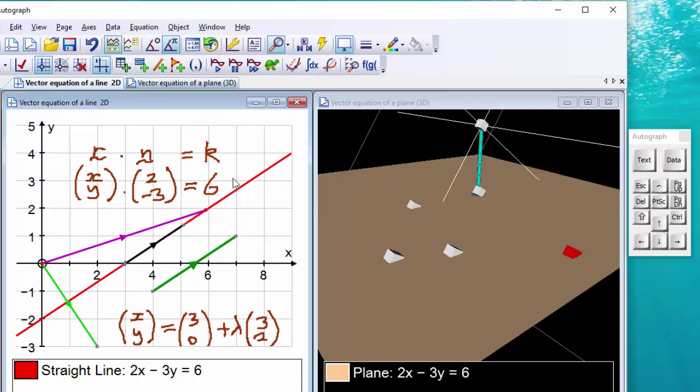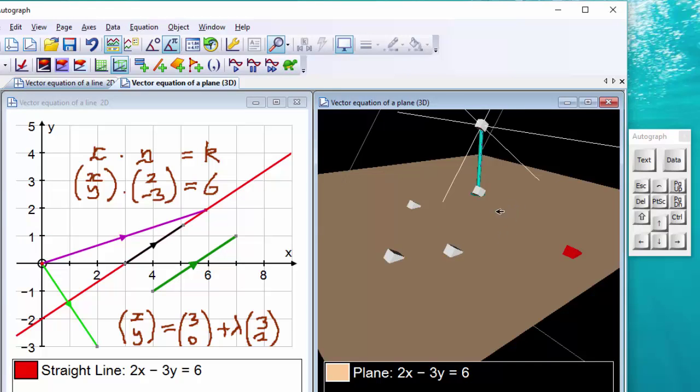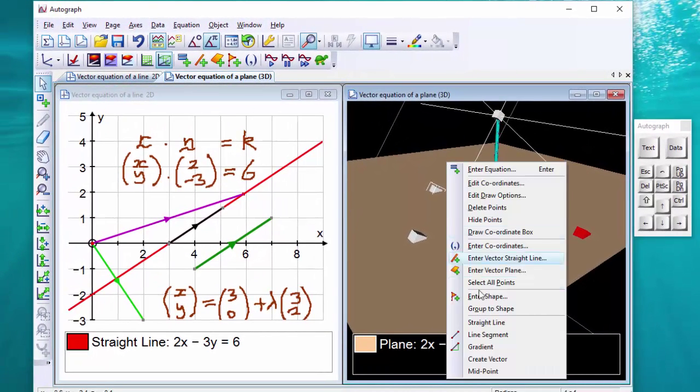So how does all this translate into three dimensions? In the three-dimensional case, I've got a plane here, exactly the same equation as we had in two dimensions. I've simply put three points on. I'm going to select two of them at a time, and right-click, create a vector.